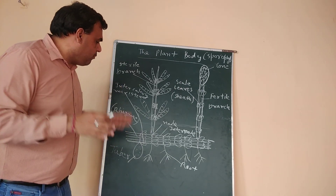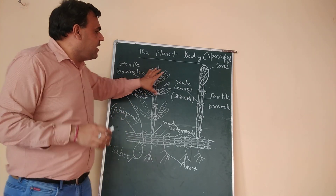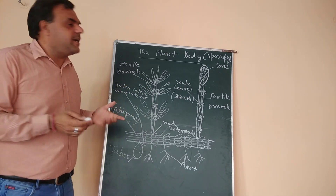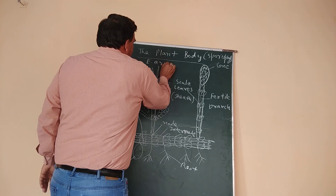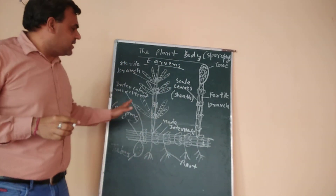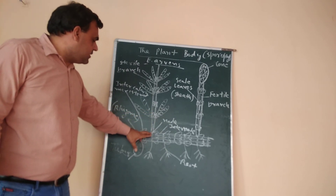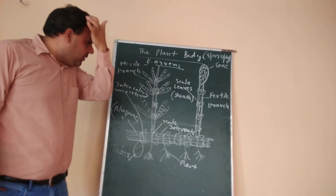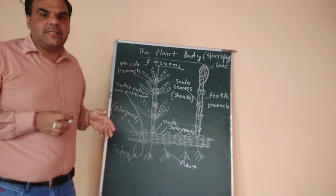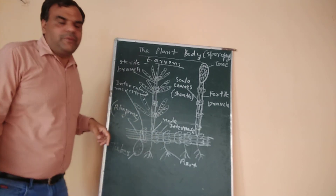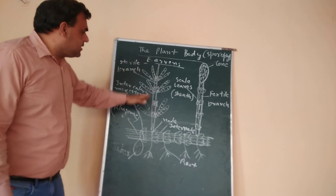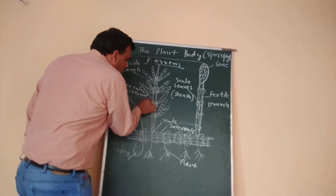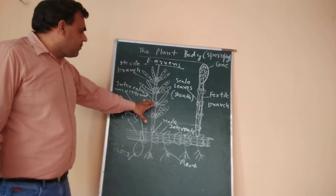Aerial branches are of two types: sterile branches and fertile branches. In some species both are the same, but in many species, such as Equisetum arvense, the sterile and fertile branches are separate from each other. The sterile branches originate from the nodes of the rhizomes. The number of branch primordia is equal to the number of ridges or furrows of the stem. The aerial branches are also divided into nodes and internodes, and many lateral branches originate from the node part of the aerial branches.